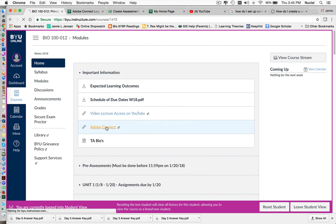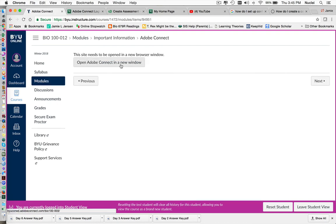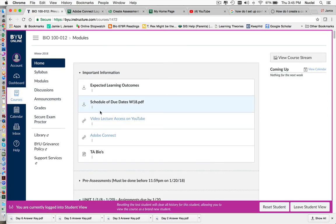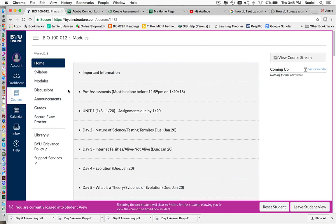The next thing under important information is the video access on YouTube. So the video lectures can always be accessed on Canvas. But for whatever reason, a few people might have little glitches in Canvas. And so you can always access the videos on our actual YouTube channel. Here's Adobe Connect. When you click on this, it will ask you if you want to open it in a new window. You do. It will take you right to our Adobe Connect page. So this is where office hours will be held. And then you can just communicate. If you have a webcam, we can see you. If not, we can just hear you. But that's where you'll access office hours. And then the last thing under there is the TA bios.